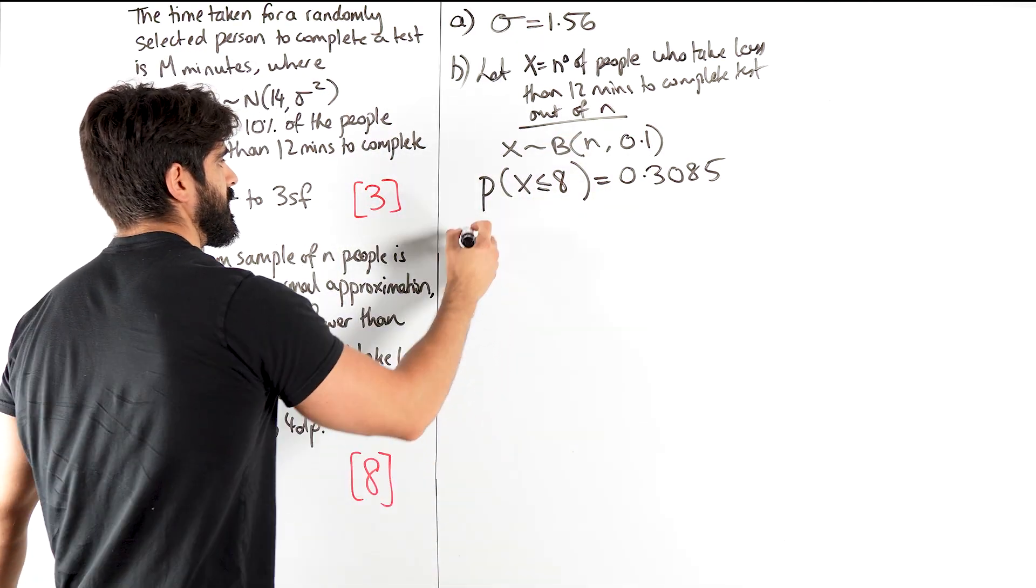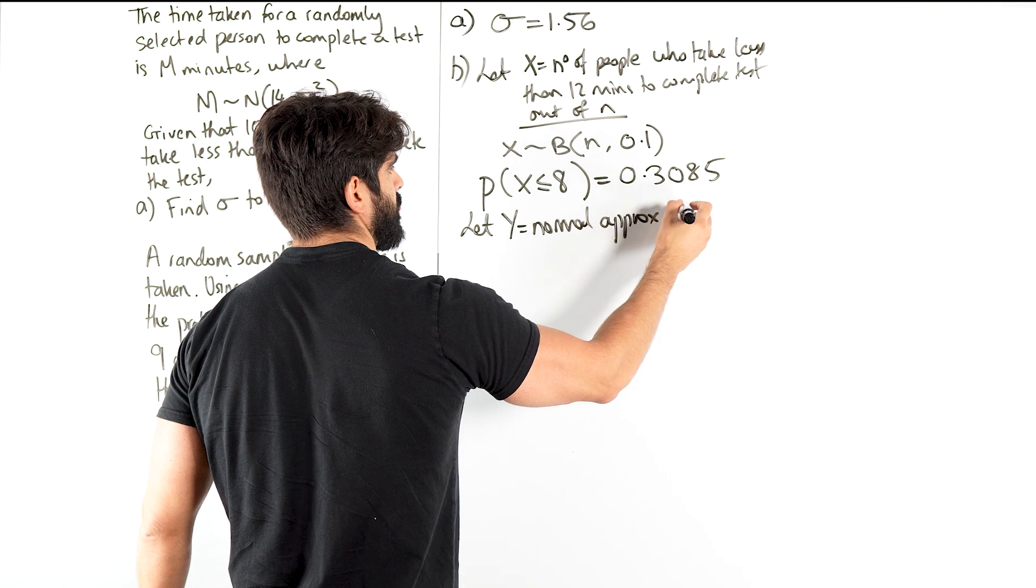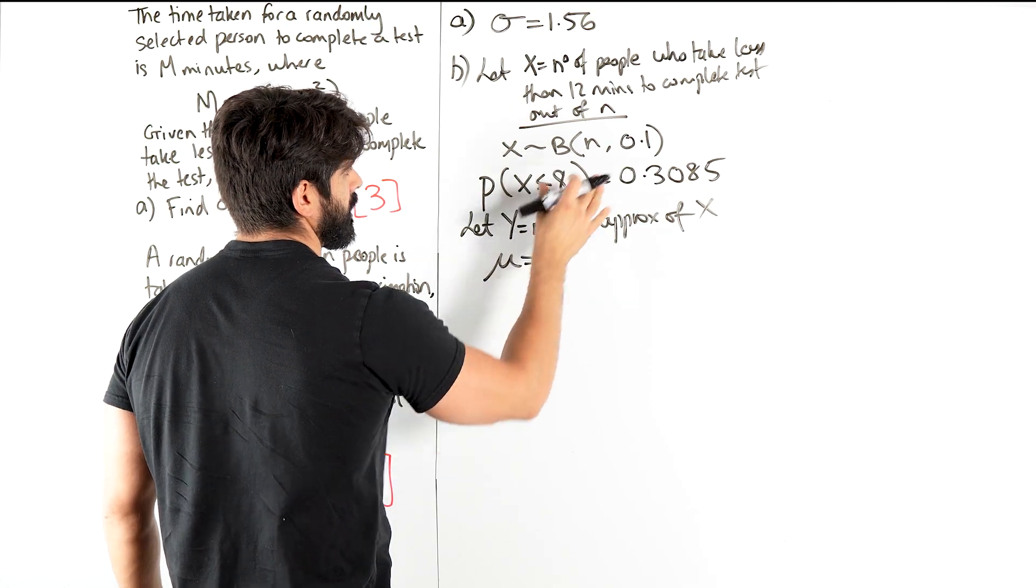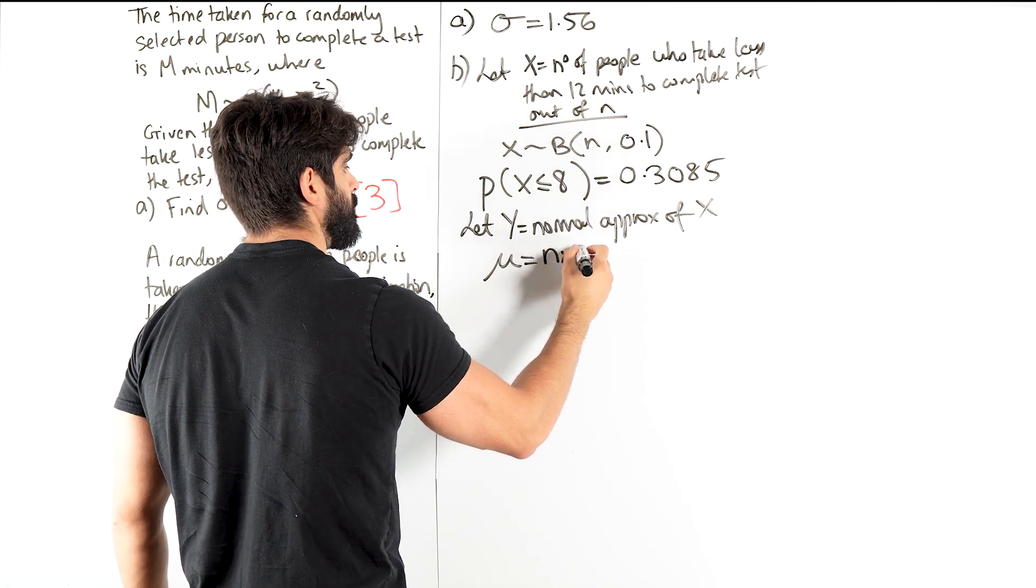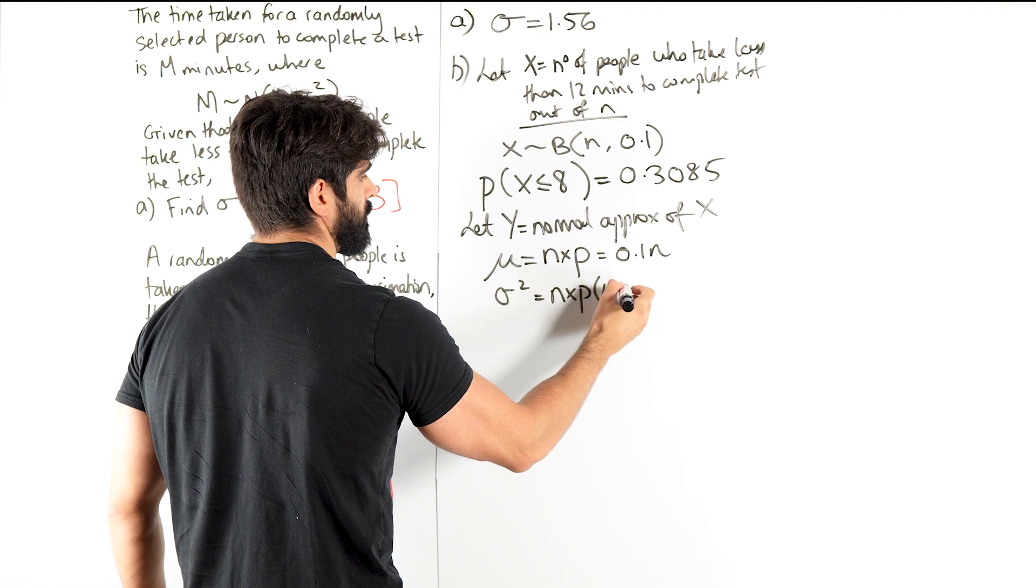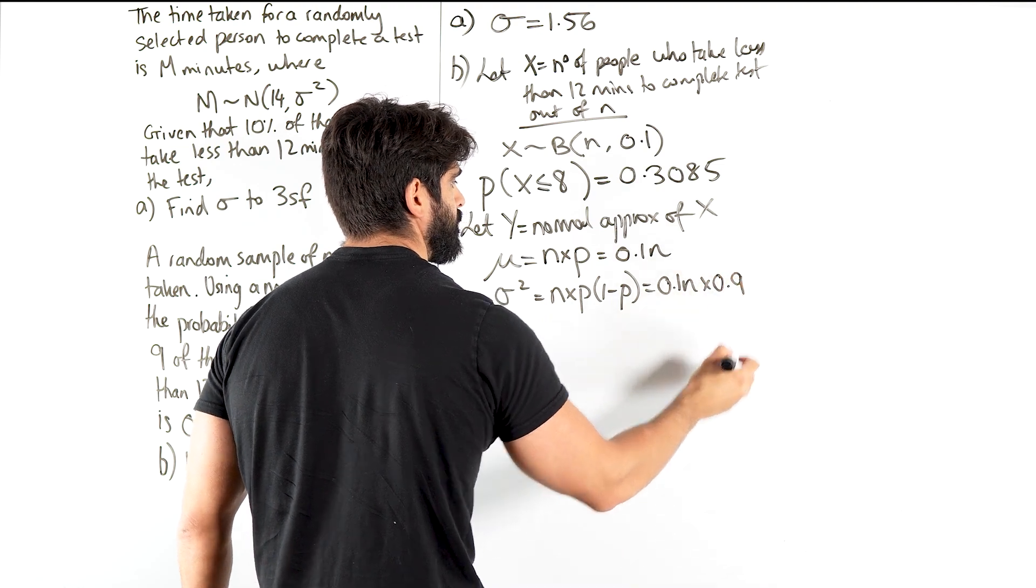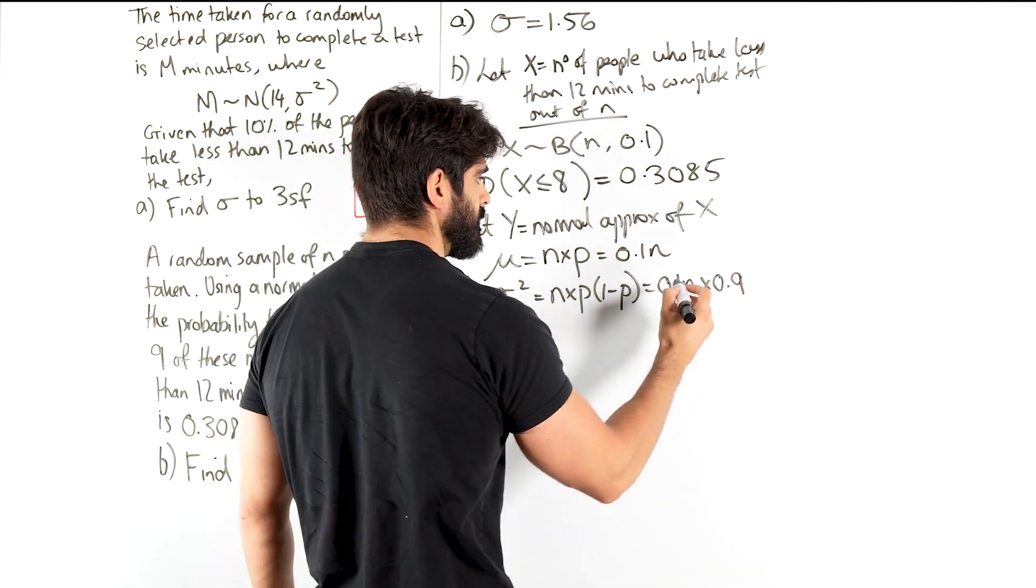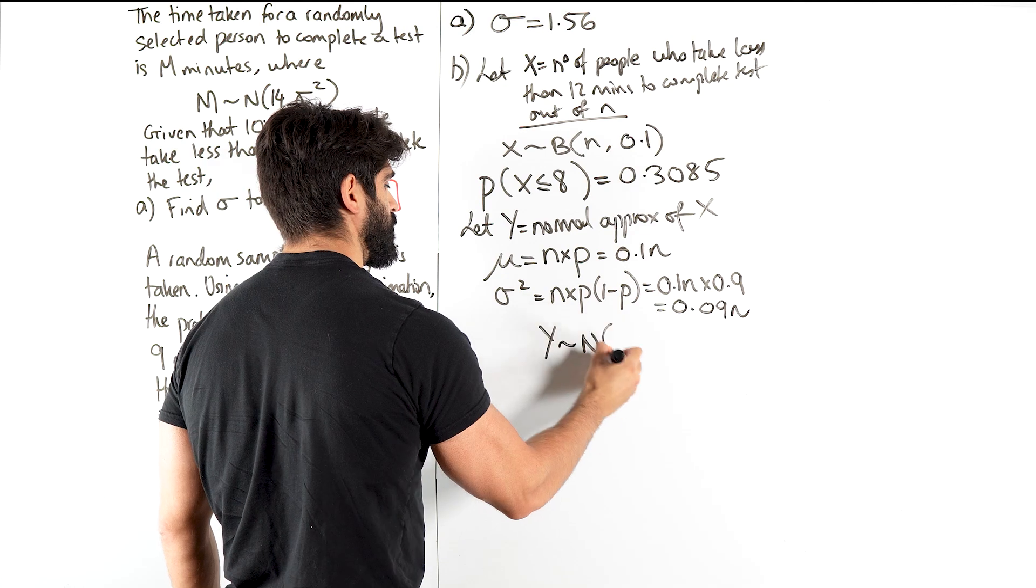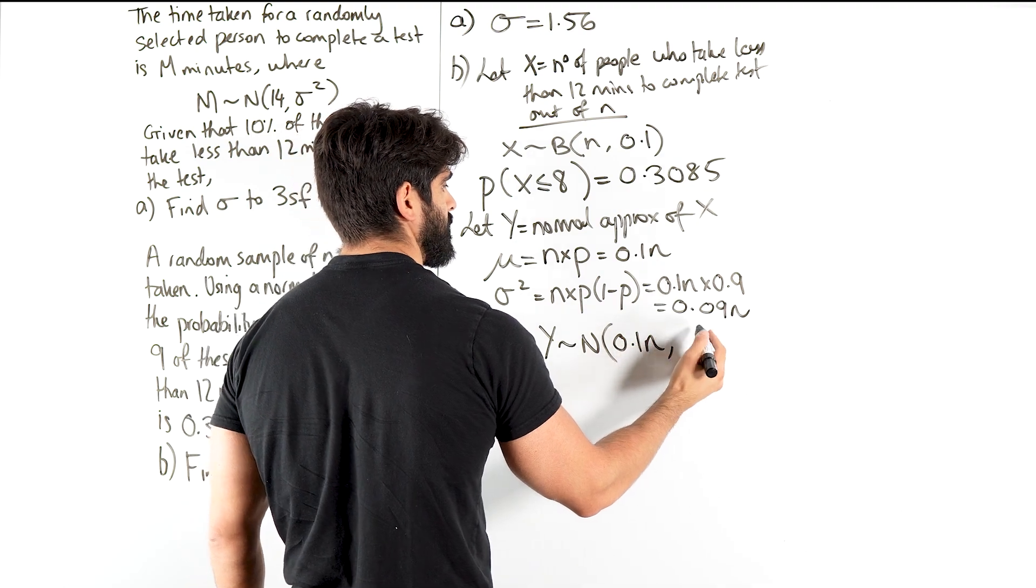Then we're going to move into the normal distribution. We're going to let Y equal the normal approximation of X. But then we have to define our normal variables. So mu, based on a binomial distribution, is just your number of trials times the probability, np, which is 0.1n. And sigma squared is n times p times 1 minus p. So np is 0.1n, and we're going to multiply that by 1 minus that, which is 0.9, which is 0.09n.